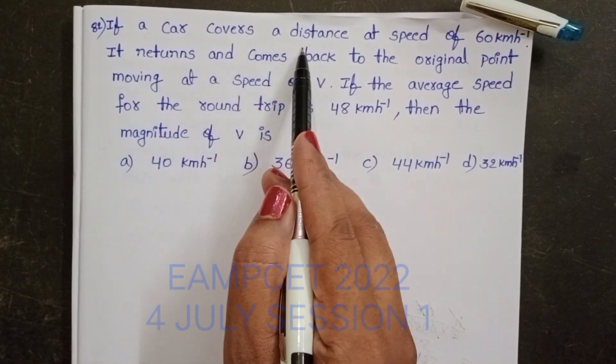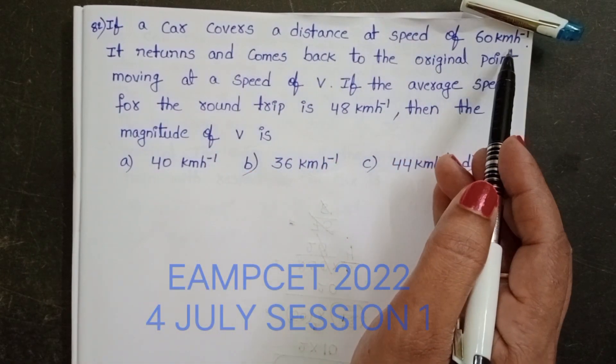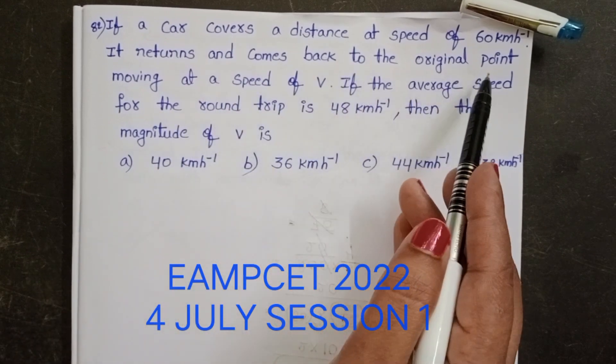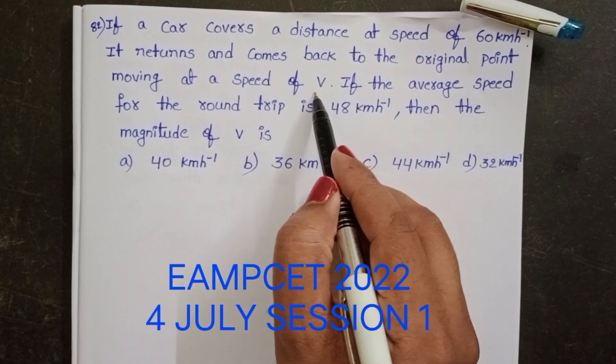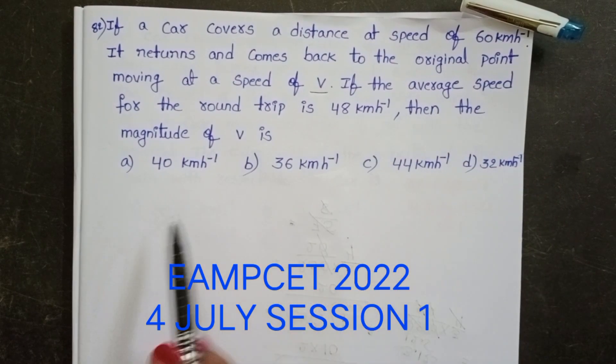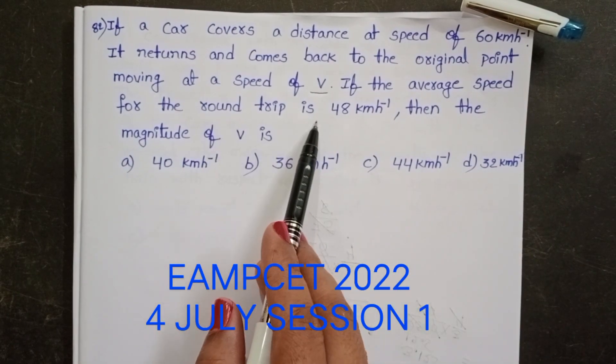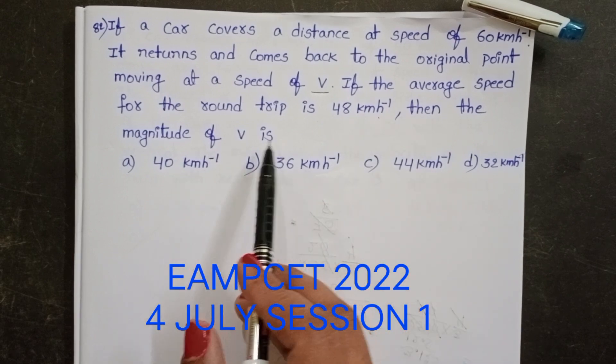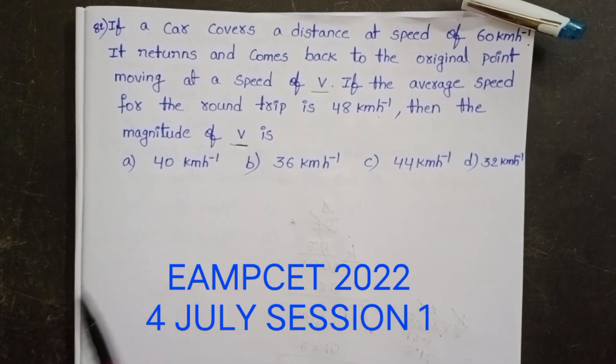If a car covers a distance at a speed of 60 km per hour, it returns and comes back to the original point moving at a speed of V. If the average speed for the round trip is 48 km per hour, then the magnitude of V is?